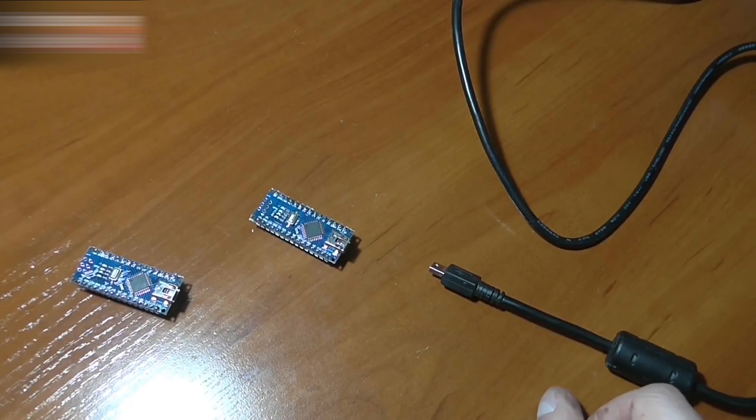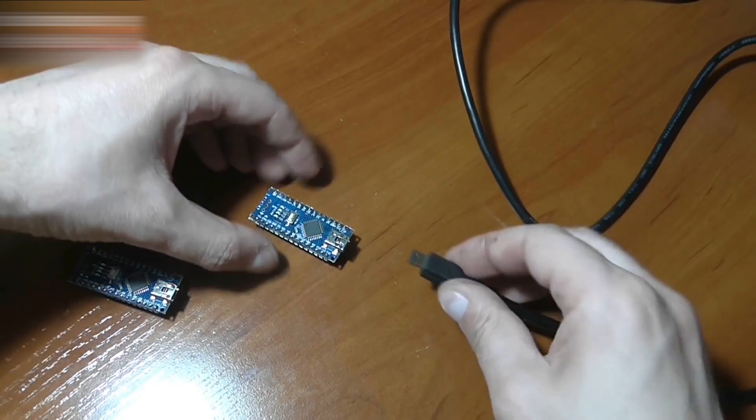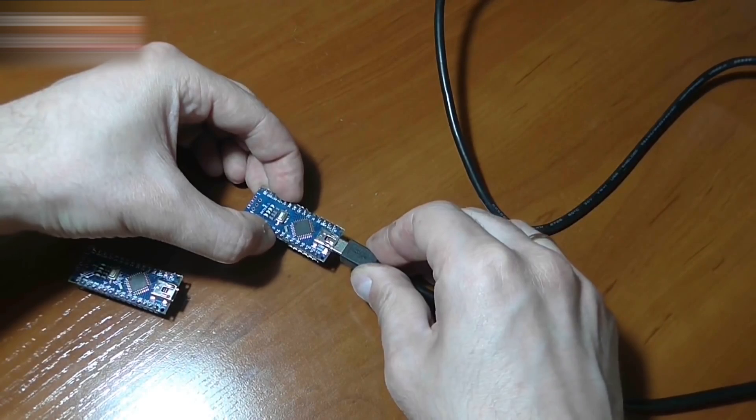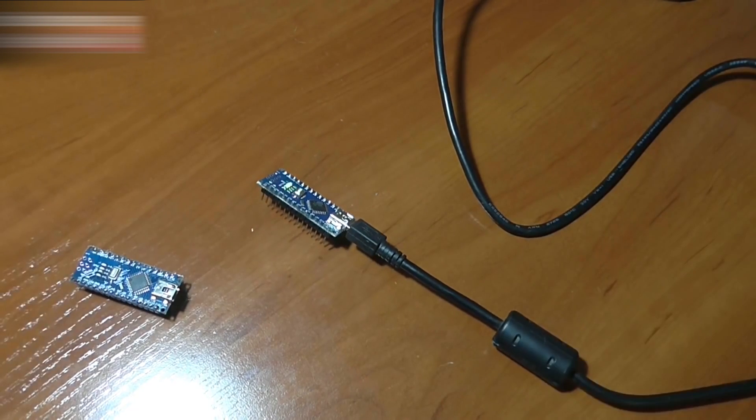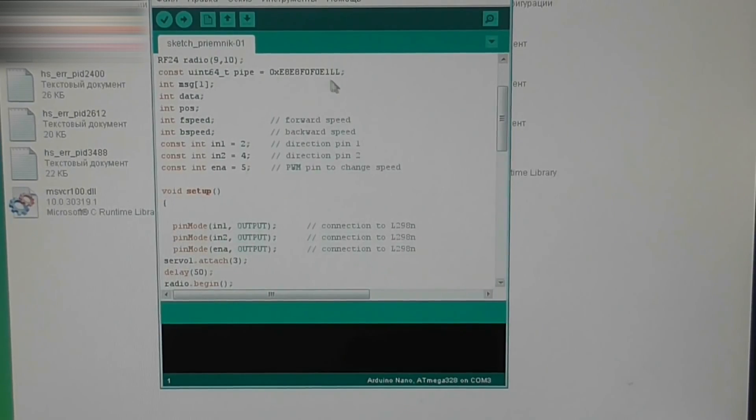Program both Arduinos. Connect the receiver board to the mini-USB connector. The links for the transmitter and receiver sketches are in the video description section.